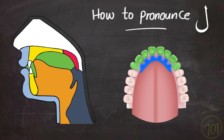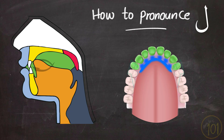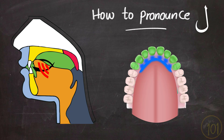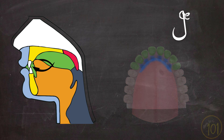So if the tongue is pressing against the alveolar ridge, how will air escape to produce the sound? Well, the breath or air will escape from around the tongue, from both sides. Air passing through like that produces the sound of Laam.